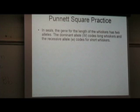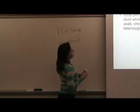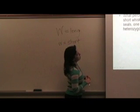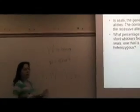In seals, the gene for the length of whiskers has two alleles. Dominant allele, big W, codes for long whiskers, and the recessive allele, little w, codes for short whiskers. Again, I'm going to write what I know. Big W is long whiskers. Little w is short whiskers. What percentage of offspring would be expected to have short whiskers from a cross of two long whiskered seals, one that is homozygous dominant and one that is heterozygous? Homozygous dominant is going to have two big W's. Heterozygous, a big W and a little w. There are my parents.